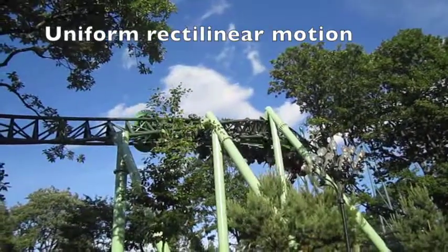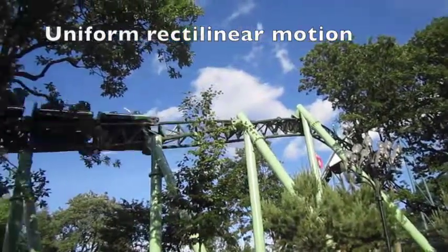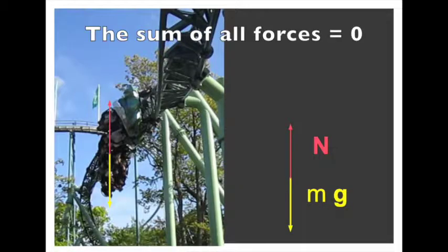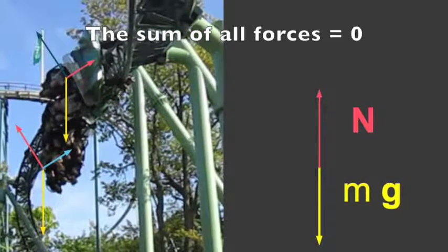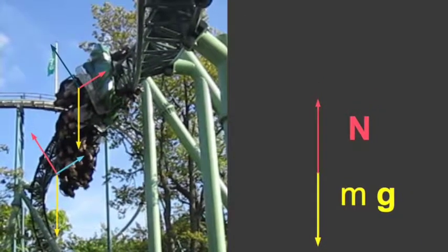When the rider is in nearly uniform rectilinear motion, the sum of all forces acting on the rider must be close to zero, according to Newton's first law. So the force from the train essentially cancels the force of gravity.